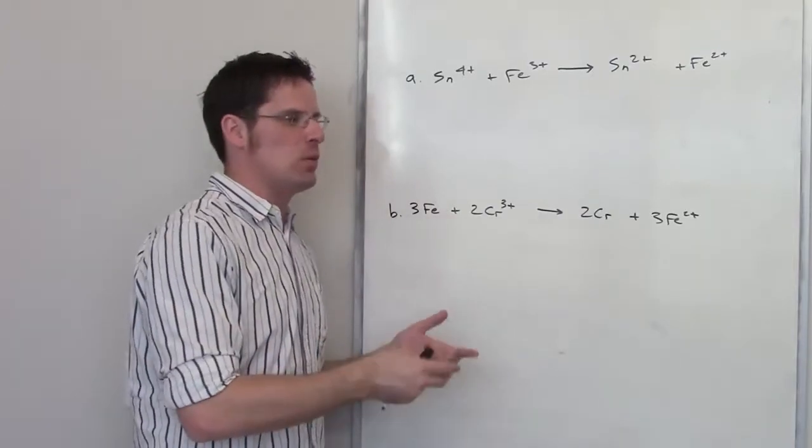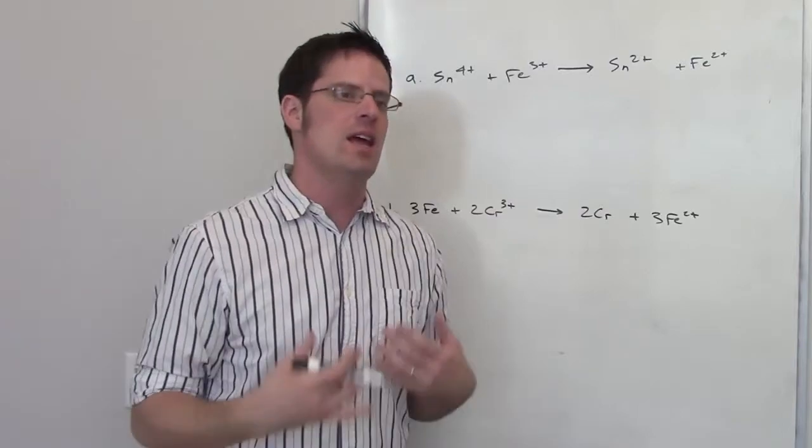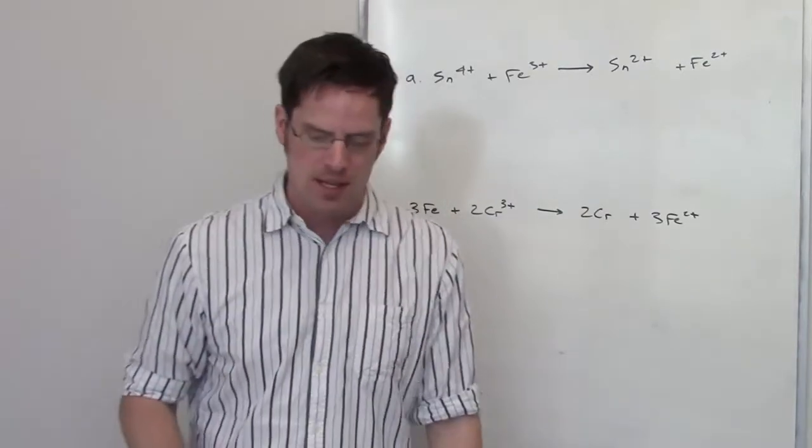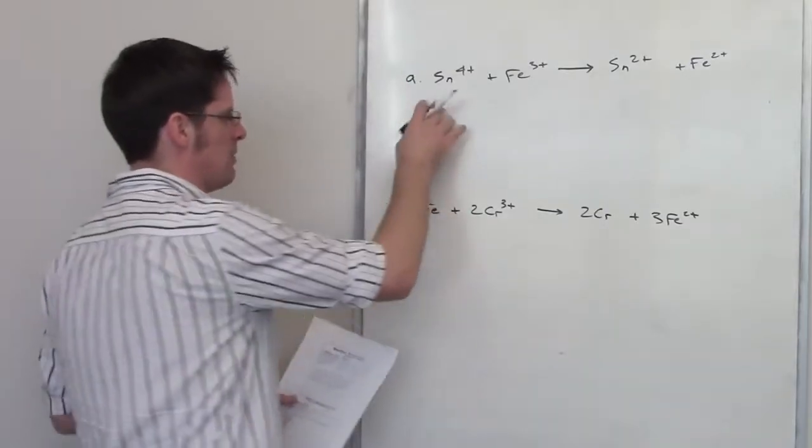If that addition number, when you add them together, comes out to be positive, it will occur spontaneously. If it comes out to be negative, then it will not. Now I'm going to start with problem B here for reasons that will become apparent, and then I'll go back to problem A.